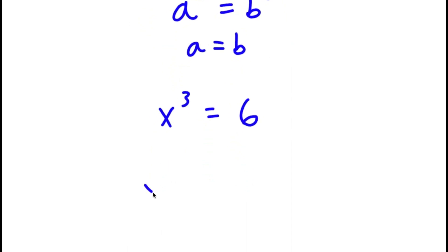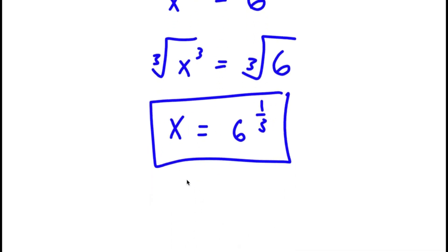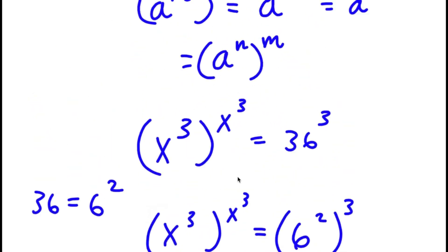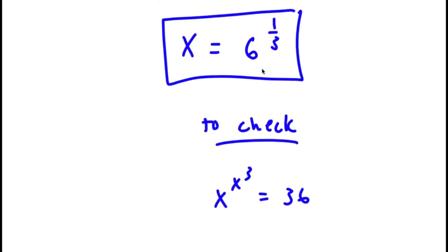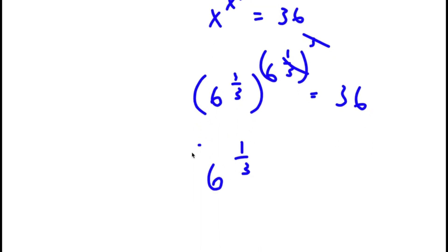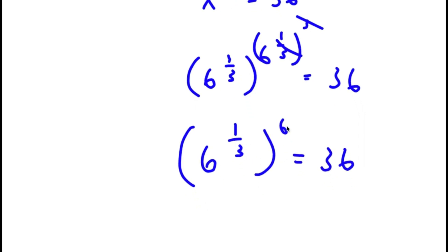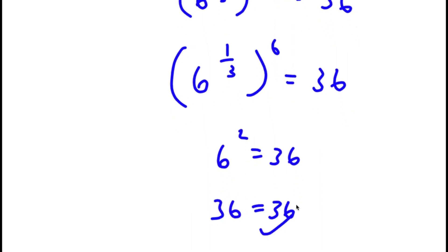Taking the cube root on both sides, the cube root of x to the power of 3 is x, so x equals the cube root of 6, which is 6 to the power of 1 over 3. To verify: substituting back, 6 to the power of 1 third, raised to the power of 6 to the power of 1 third to the power of 3. The 1 third and 3 cancel, leaving 6 to the power of 1 third to the power of 6, which is 6 to the power of 2, which equals 36. Correct.